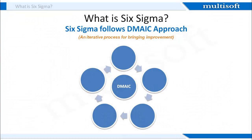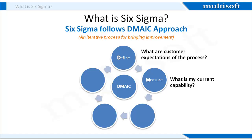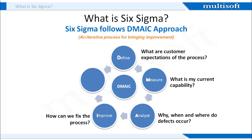You must have heard of the DMAIC approach. Six Sigma follows this approach wherein D stands for Define, M for Measure, A for Analyze, I for Improve, and C for Control. While performing Six Sigma processes, we need to follow a set path that starts with finding out the customer expectations, then evaluating the organization's current capability, and finally analyzing why, when, and where defects occur. After completing this analysis, we need to fix the processes wherever required and then ensure that the processes function in the same manner throughout the process lifecycle.